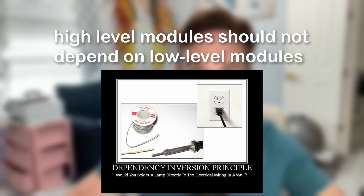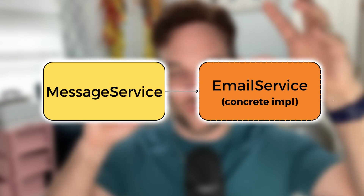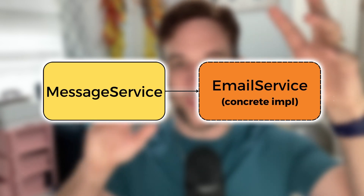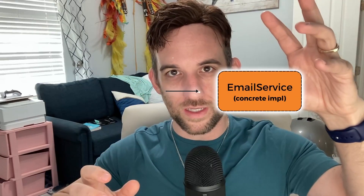It states that high-level modules should not depend on low-level modules. A violation of this principle occurs when we have a higher-level module that depends directly on a concrete implementation instead of having some interface or abstract class — it depends on a concrete implementation. So we want to fix that and separate those out.